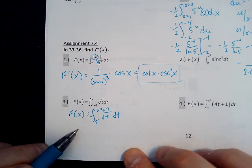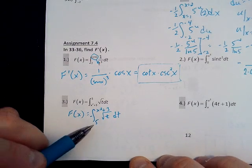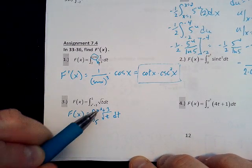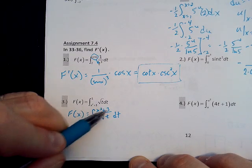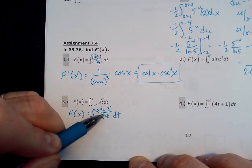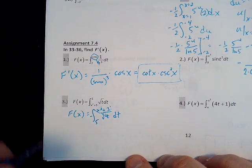And so now the second fundamental theorem of calculus says if I have the integral of a function from A to G of X of F of T dt, then I'm going to take G of X and put it in for T and then multiply by the derivative of G of X.